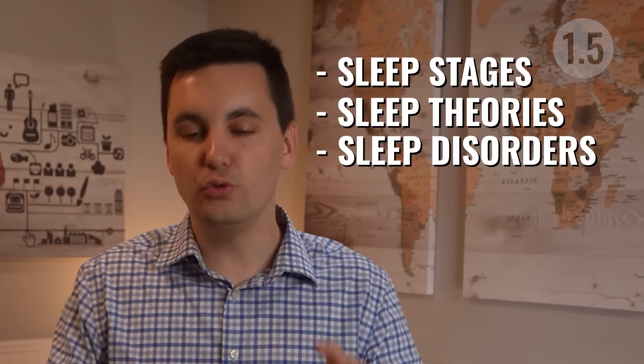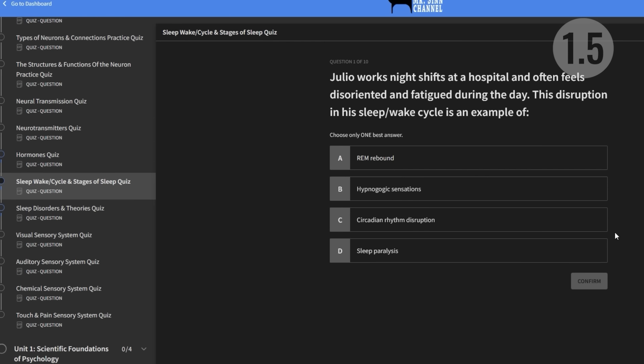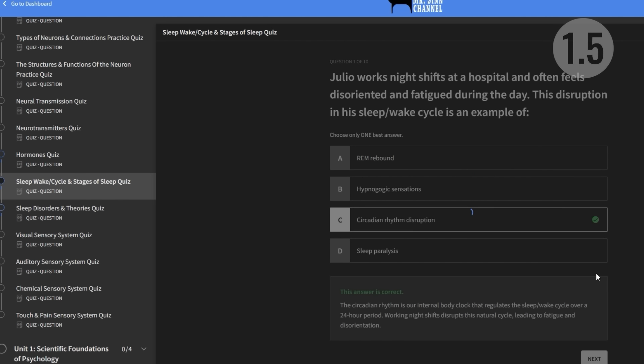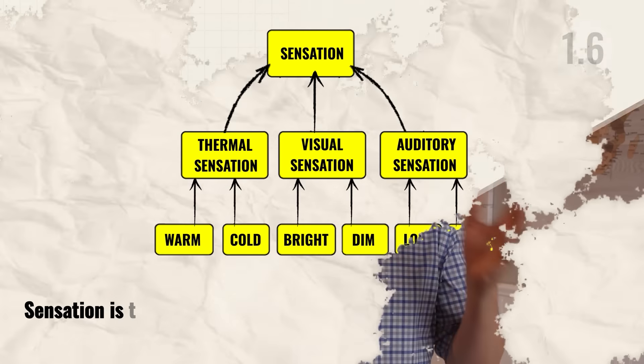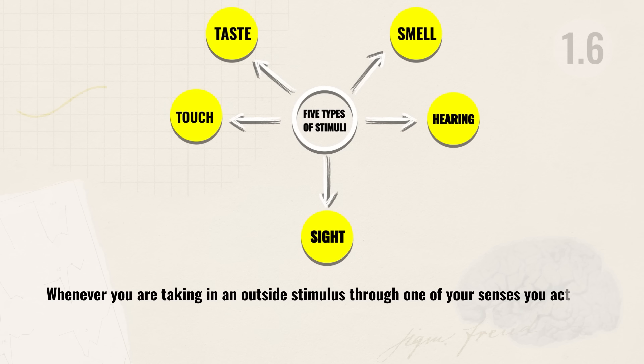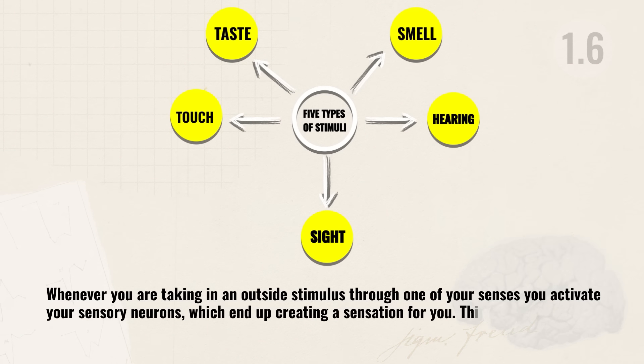Sensation is the process of detecting information from the environment — different from perception, which we'll cover in Unit 2. Whenever you take in an outside stimulus through one of your senses, you activate your sensory neurons, creating a sensation. This is known as sensory transduction. In order to experience a sensation, you need to hit the absolute threshold — the smallest amount of stimulation needed to notice a sensation at least 50% of the time. Sometimes we may miss a stimulus because of sensory adaptation, which happens when a stimulus is continuous and unchanging — for example, lighting a candle and eventually no longer being able to smell it.